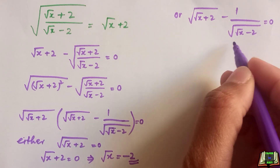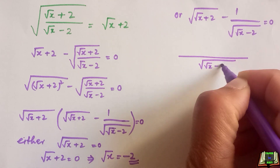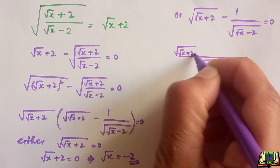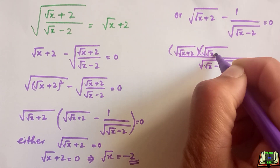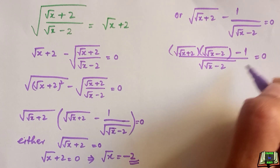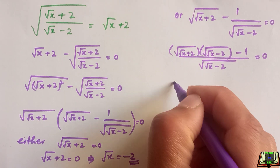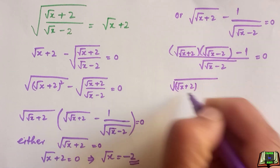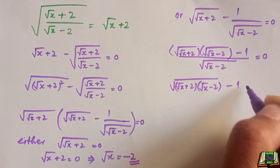Looking at the second case, we take the LCM, which is the square root of root(x-2). In the numerator we have the square root of (x+2) times the square root of (x-2), minus one, all equals zero. Moving the one to the right hand side, it will be multiplied and we have the expression equal to one.